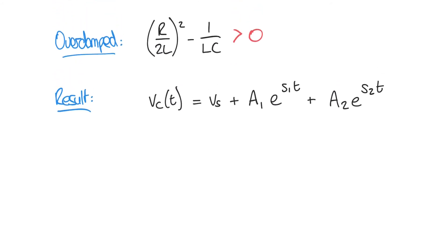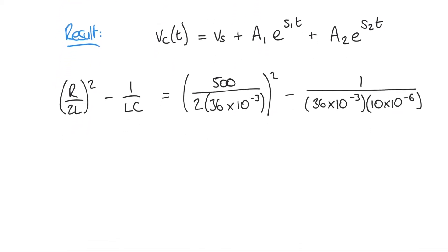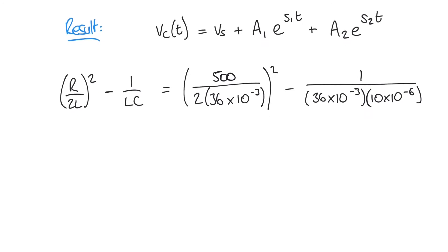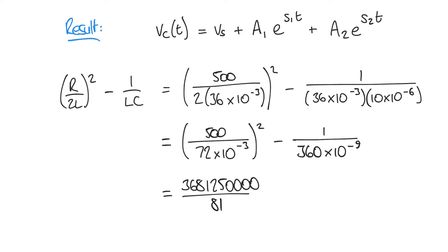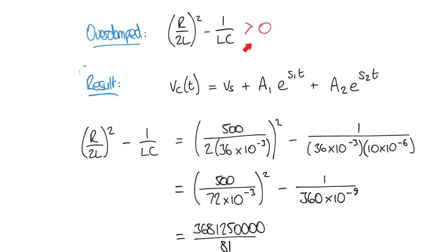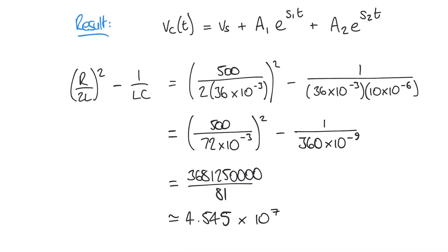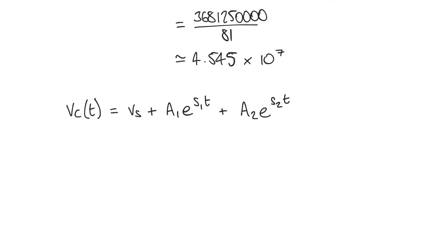We've set our component values for an over-damped case, but let's verify that the discriminant is indeed greater than zero. Substituting our circuit values in, we get a value of approximately 4.5 × 10⁷. The exact numerical value isn't critical — what matters is that it's greater than zero. So we're clearly in an over-damped condition, and we'll use this formulation for our result.